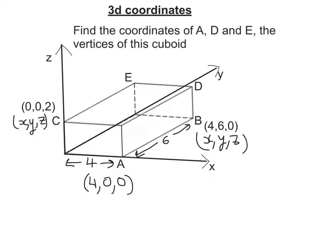Let's look at D. Well D is directly above B, so it's going to be 4 along the X and 6 along the Y. Now if C here is 0, 0, 2, that means it's 2 up, so that means the distance between B and D is 2 up. So it's going to be 4, 6, 2.